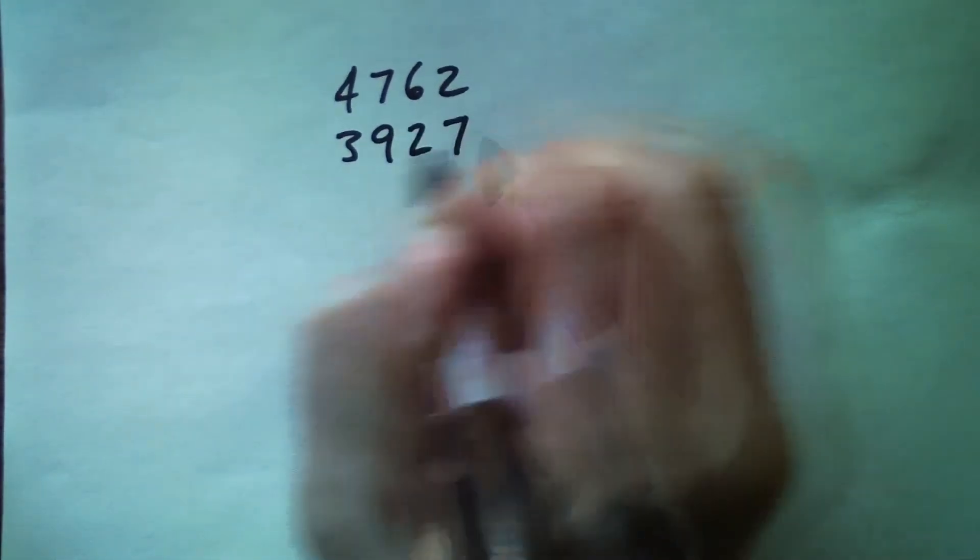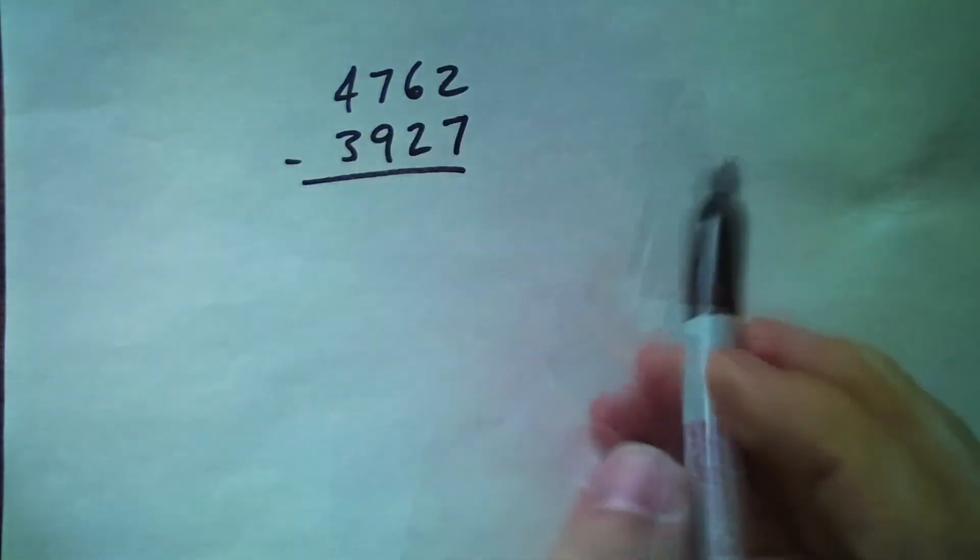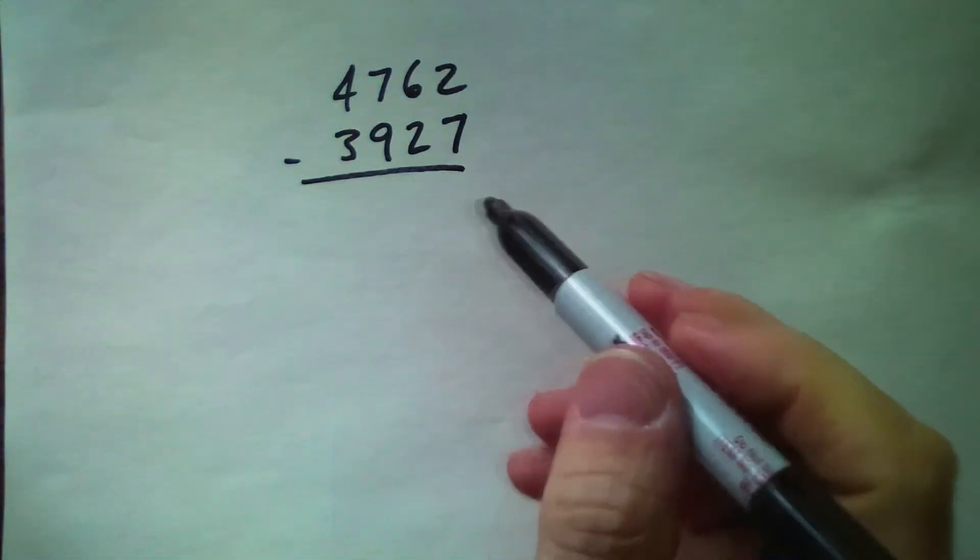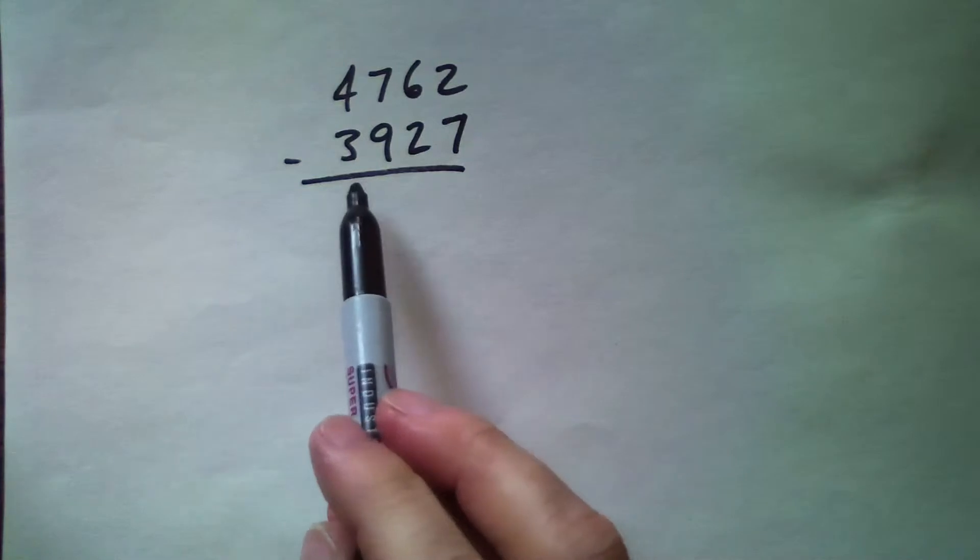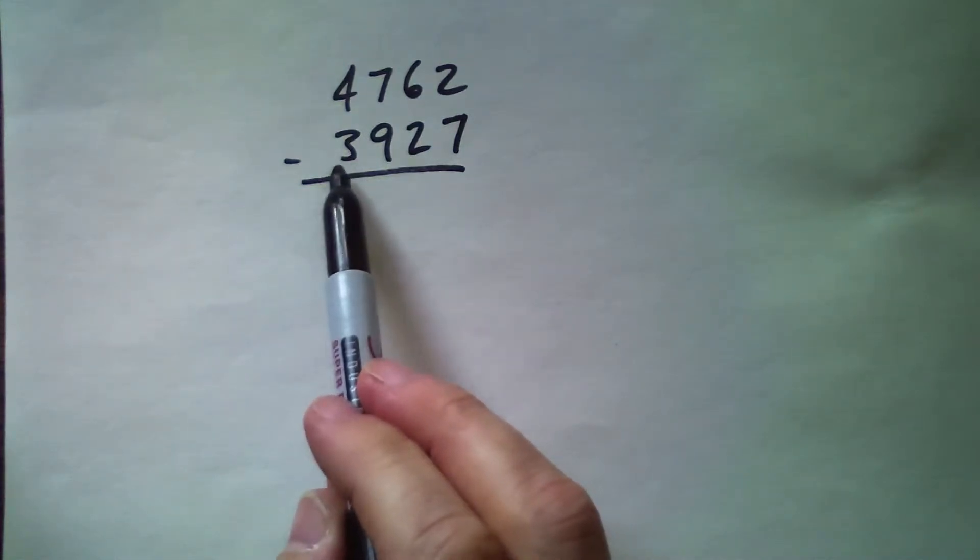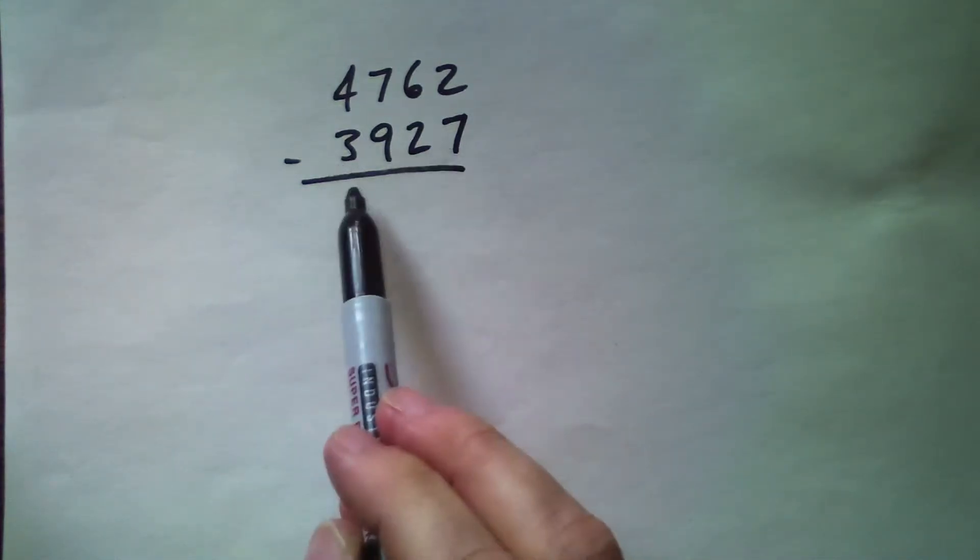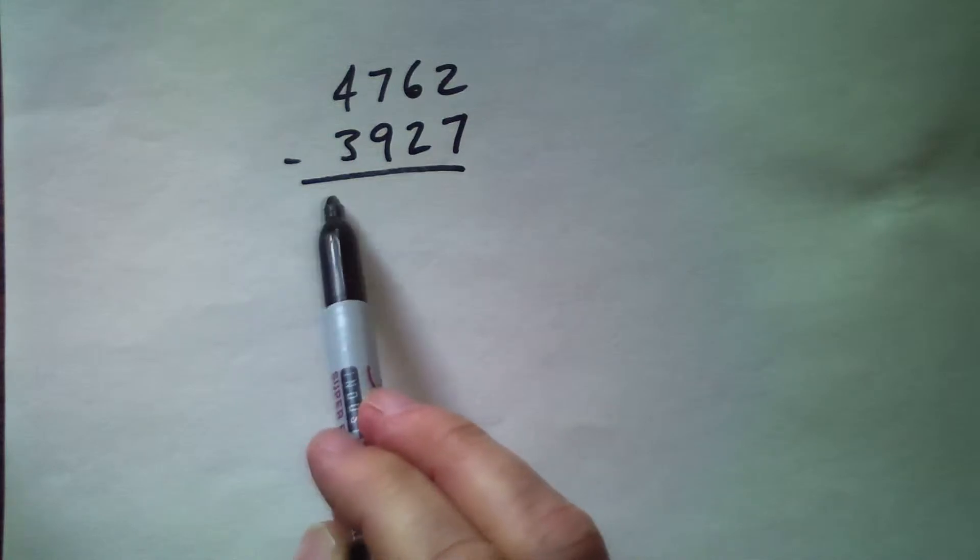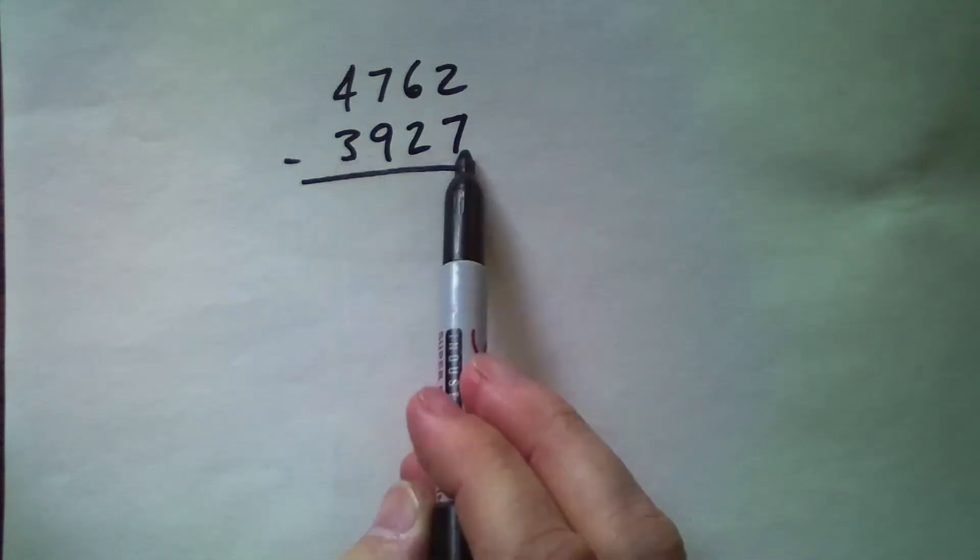Okay, so the way this algorithm works is that we take the complement of the bottom number here with respect to the same number of nines. So there are four digits, so we'd be taking the complement of 3927 with respect to 9999.